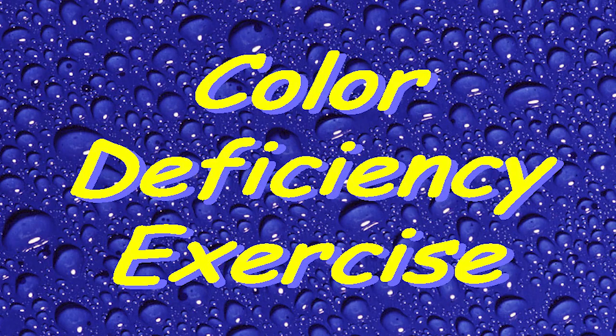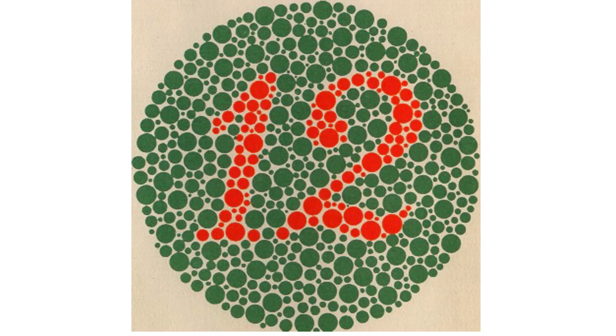Let's take a short test to see how we do. What I have here is a color deficiency test — you're going to see a circle with a bunch of color dots in it, and you're going to tell me what number you see in there. Then I'll go to another slide that will show what the result should be and what you might see. There are about a dozen slides. Just don't think about it too long — tell me what you see quickly.